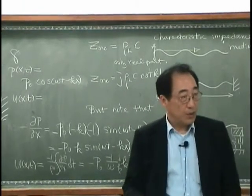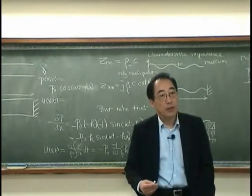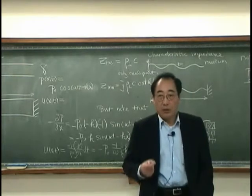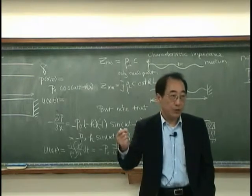Driving point impedance is always rho zero C. That means the wave is propagating away from the point of excitation.